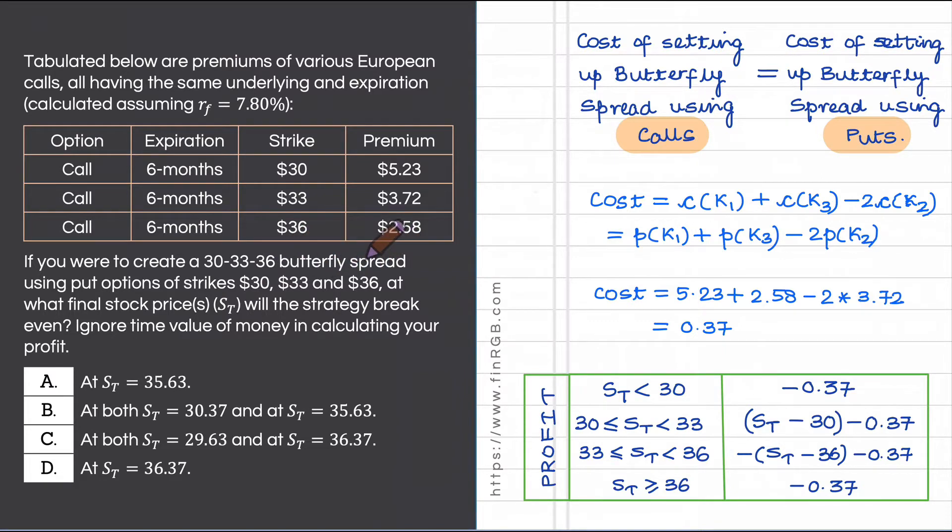I am assuming it's a long butterfly spread that we are talking about. The expiry of this butterfly spread is six months and the three strikes involved are 30 that's my low strike, 33 that's my intermediate strike and 36 that is my high strike.